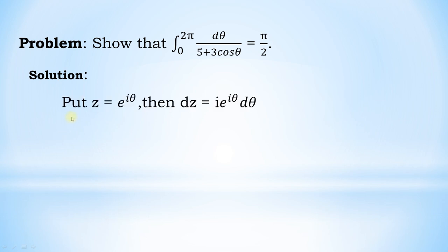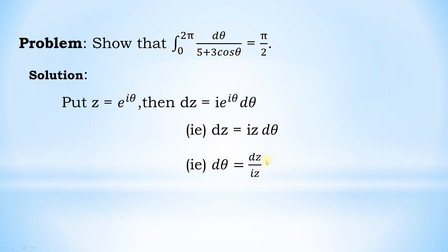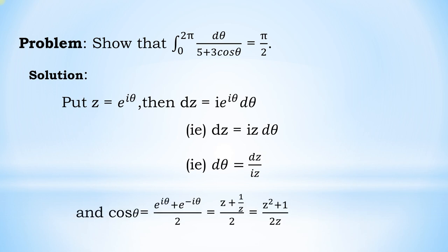Solution: Substitute z = e^(iθ). Then dz = i·e^(iθ) dθ = iz dθ, so dθ = dz/(iz). Also, cos θ = (e^(iθ) + e^(−iθ))/2 = (z + 1/z)/2 = (z² + 1)/(2z).